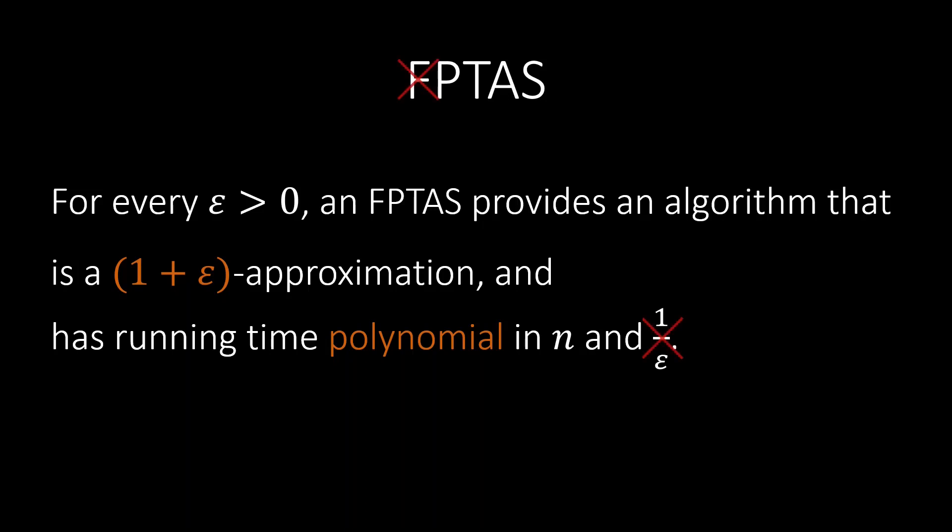If the algorithm runs polynomially in n, but not necessarily in 1 over epsilon, the scheme is no longer an FPTAS. Instead, it is then only a polynomial time approximation scheme, or PTAS.